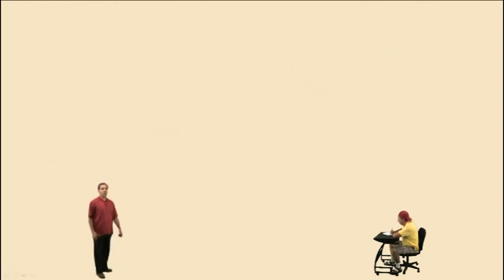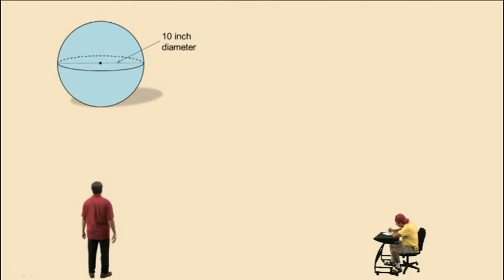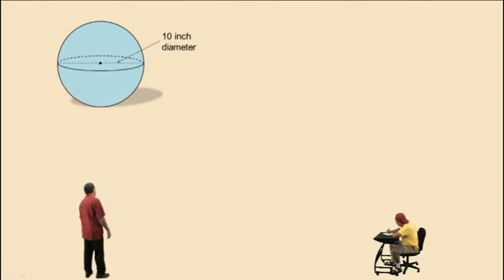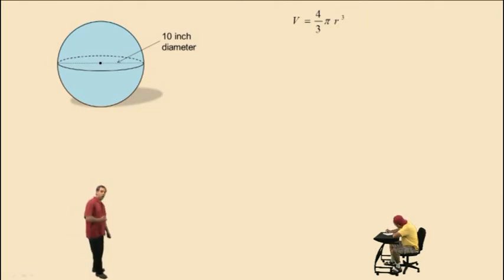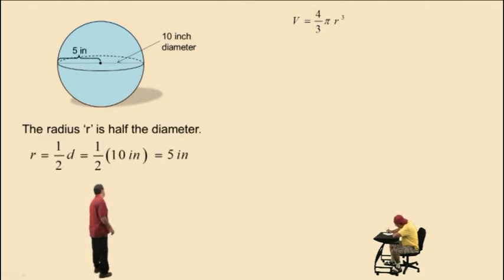Now let's work with a sphere. A sphere is just a ball. The diameter of the sphere is the distance from edge to edge through the center, and it's 10 inches. The formula for the volume of a sphere is 4 thirds pi r cubed. The radius is half the diameter, so 1 half times 10 inches is 5 inches.